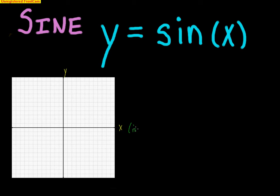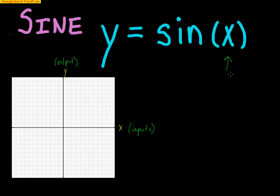To understand how we're going to graph this, the first thing to understand is that we're going to graph this in the xy coordinate plane — the x-axis and the y-axis. This is the coordinate plane you've been dealing with ever since algebra. The x's are what we call the input values, and the y's are what we call the output values.